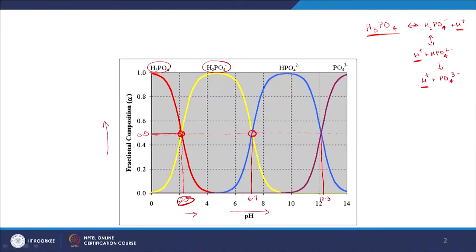pKa gives us an idea about the relative strength or weakness of the acid. To be objective, you always look at pKa. Since this is triprotic, we have 3 pKa values. At each pKa value the relevant protonated and deprotonated forms are equal in concentration - that is the speciation diagram. The same applies to pKa3 where HPO₄²⁻ and PO₄³⁻ are equal in concentration.